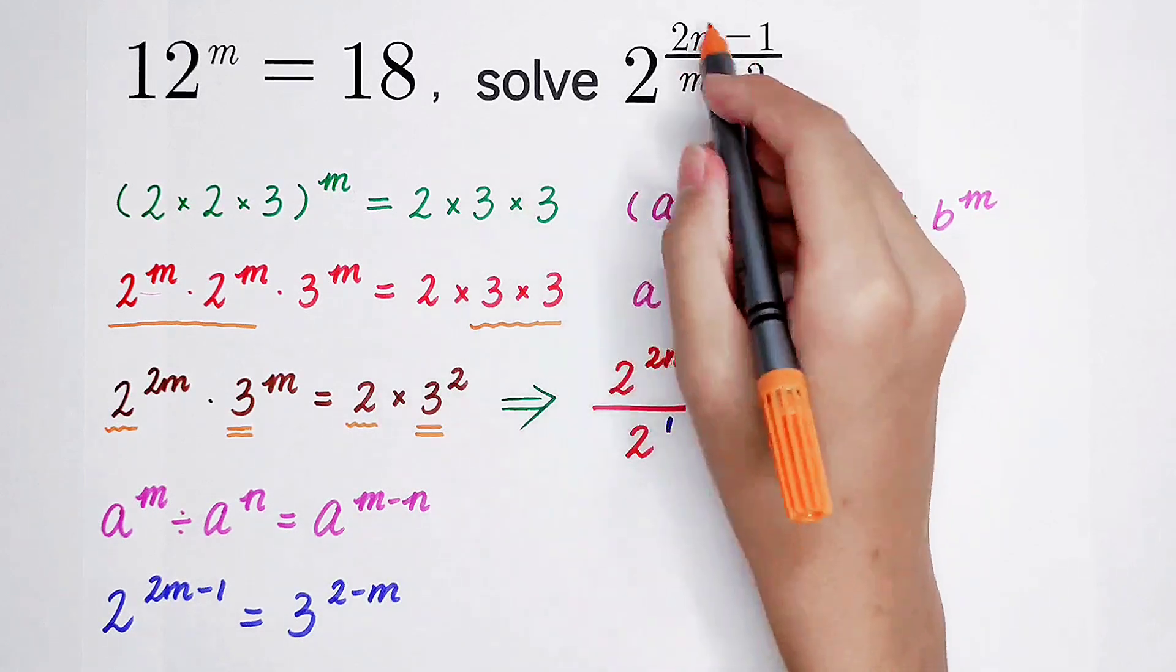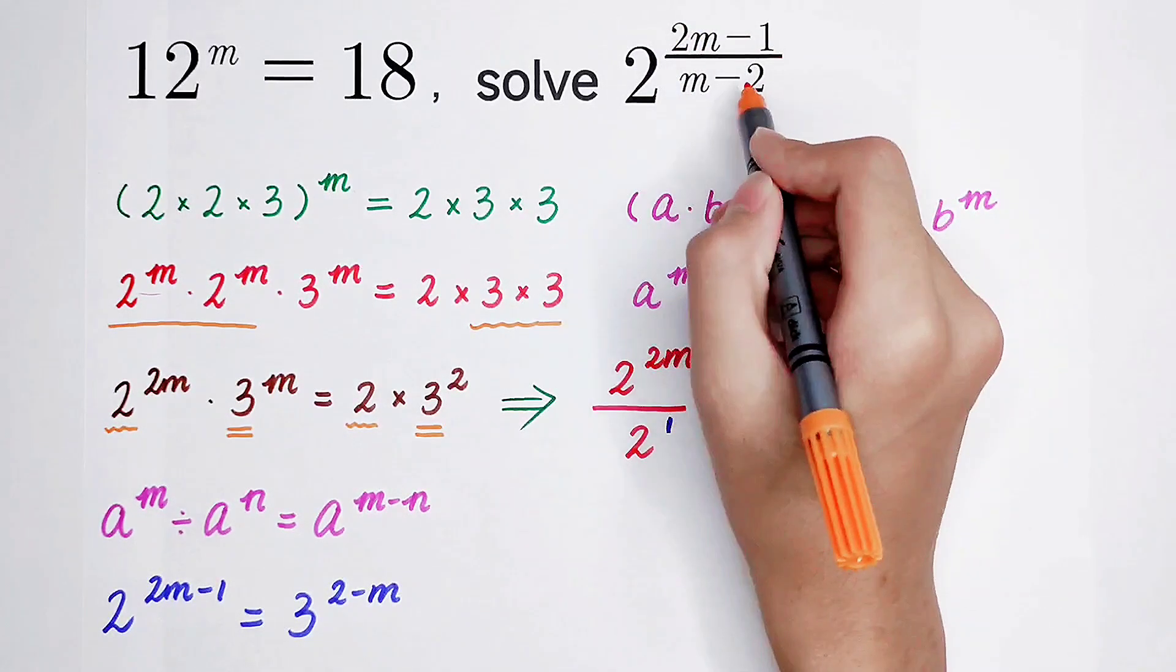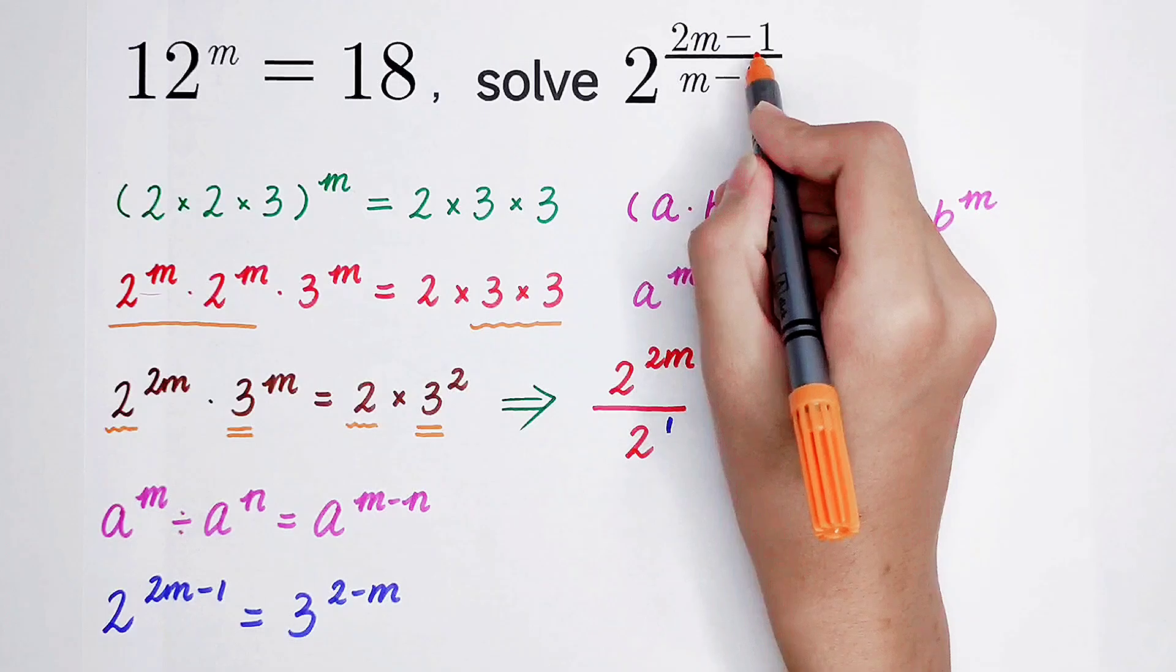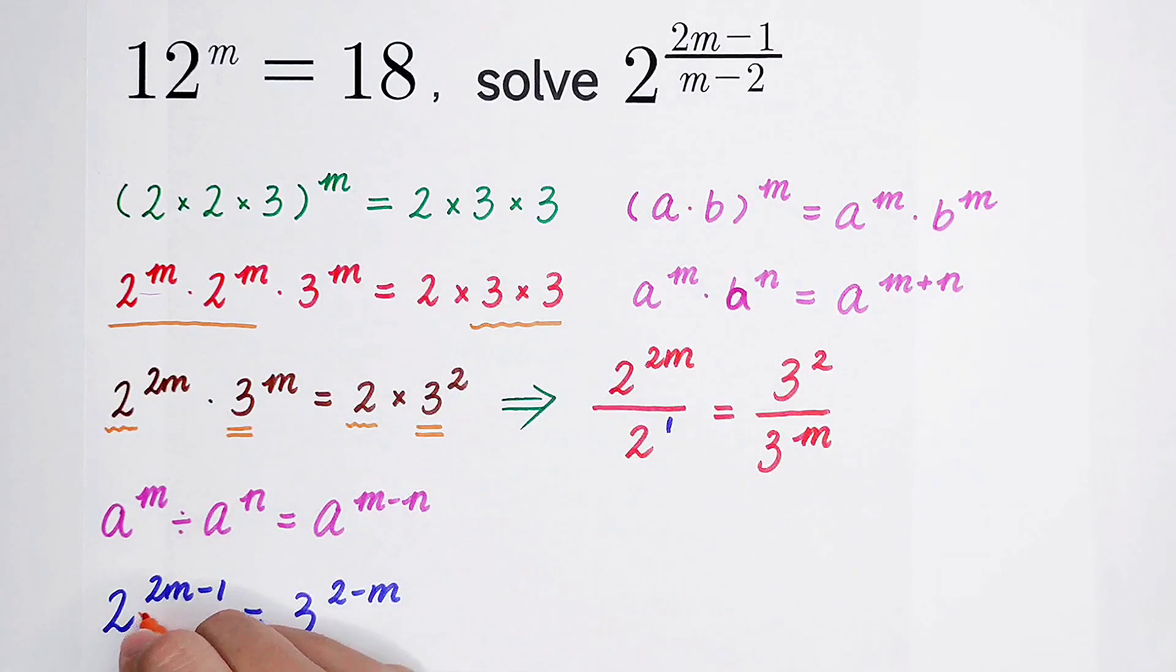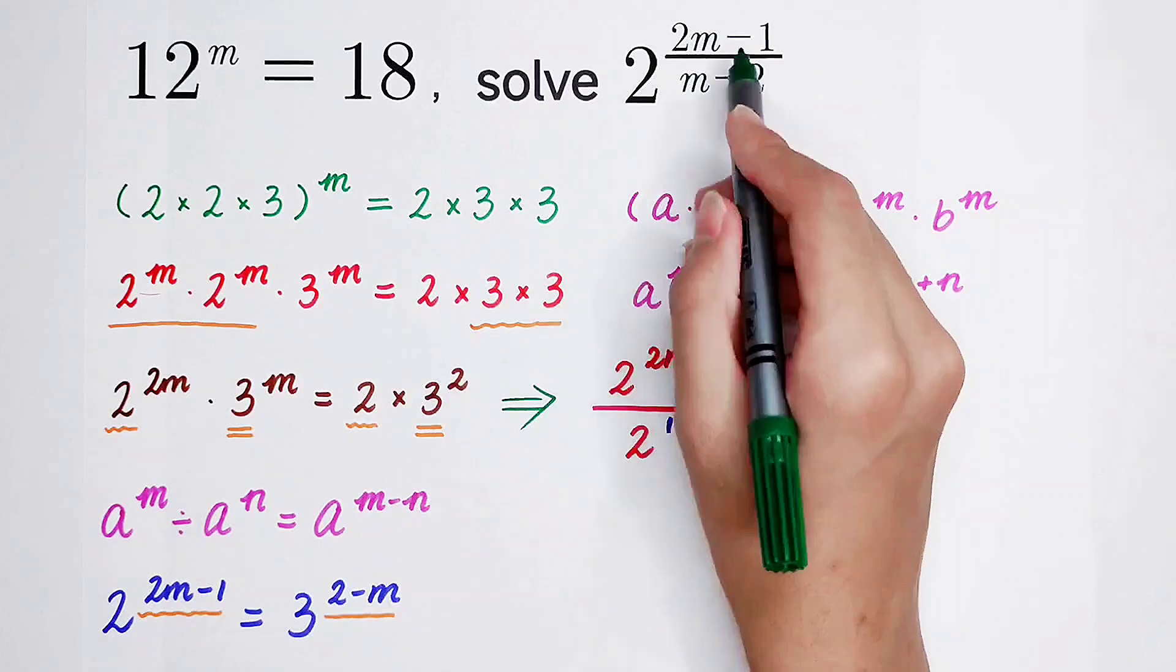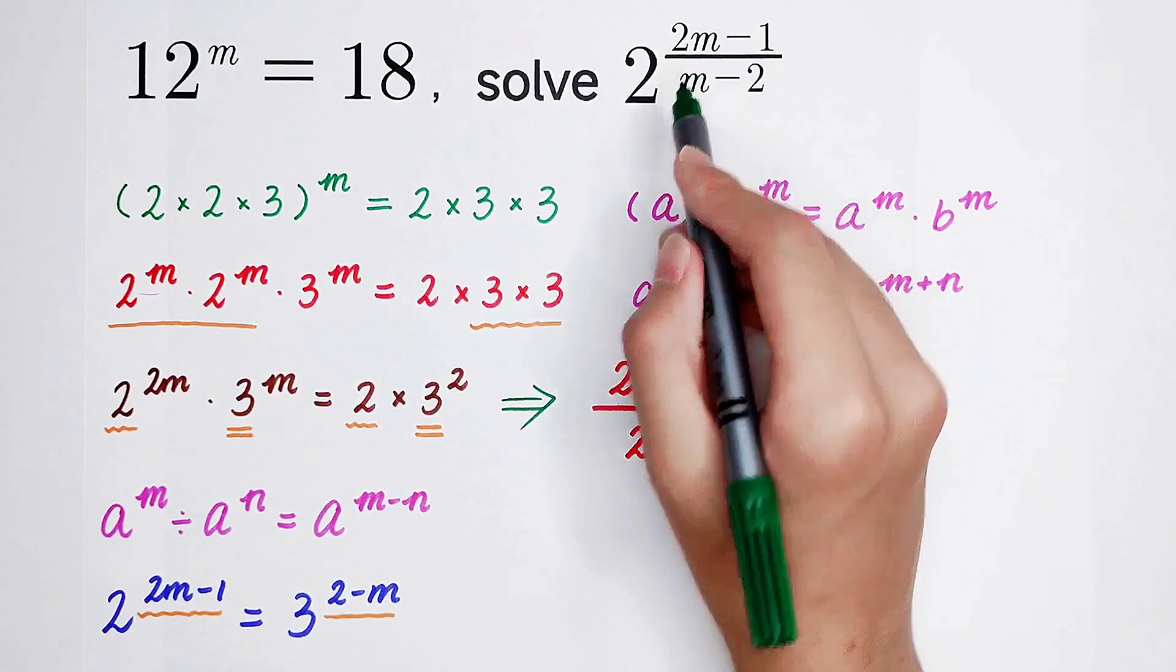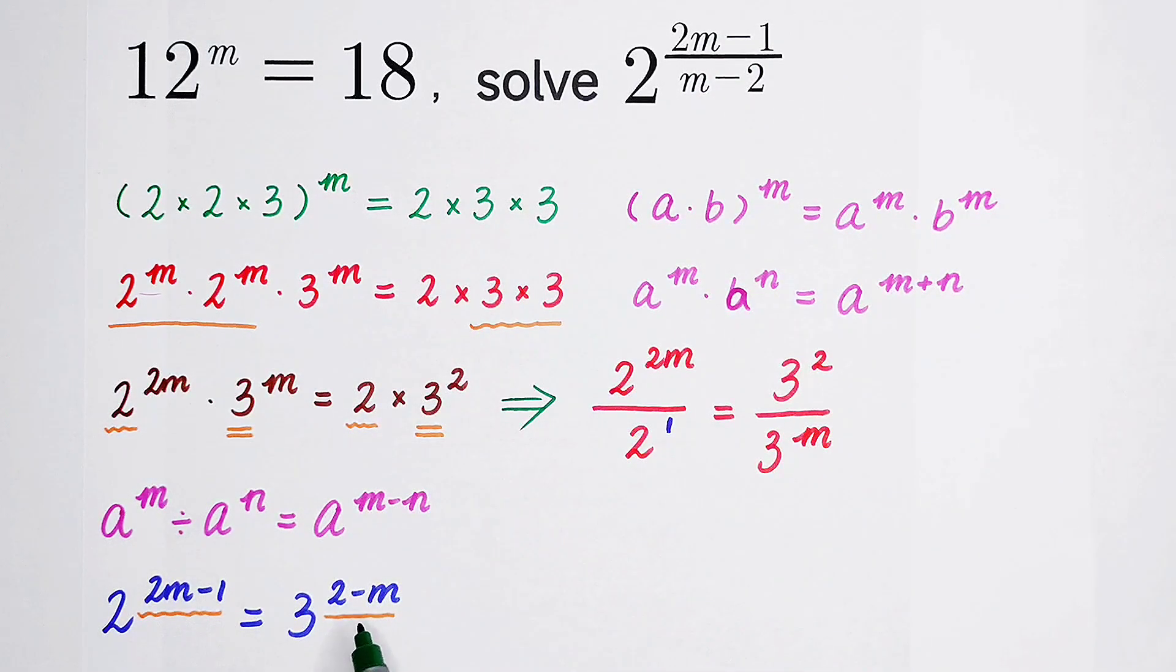You see that, we got the value of this on the exponent. On the numerator is 2m minus 1. But here is 2 minus m. They are quite similar. Because I want to get this exponent, not this or this. And the base is 2. Here the base is 2. So I can do this.